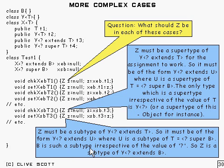That's going to be a subtype irrespective of the value that we choose for that. It's always going to be a subtype whatever value we choose for T. It's going to be a subtype of it if it's B. So Z then is going to be Y<?> extends B, or of course a subtype of it as usual, because it's an assignment you can always use a subtype.